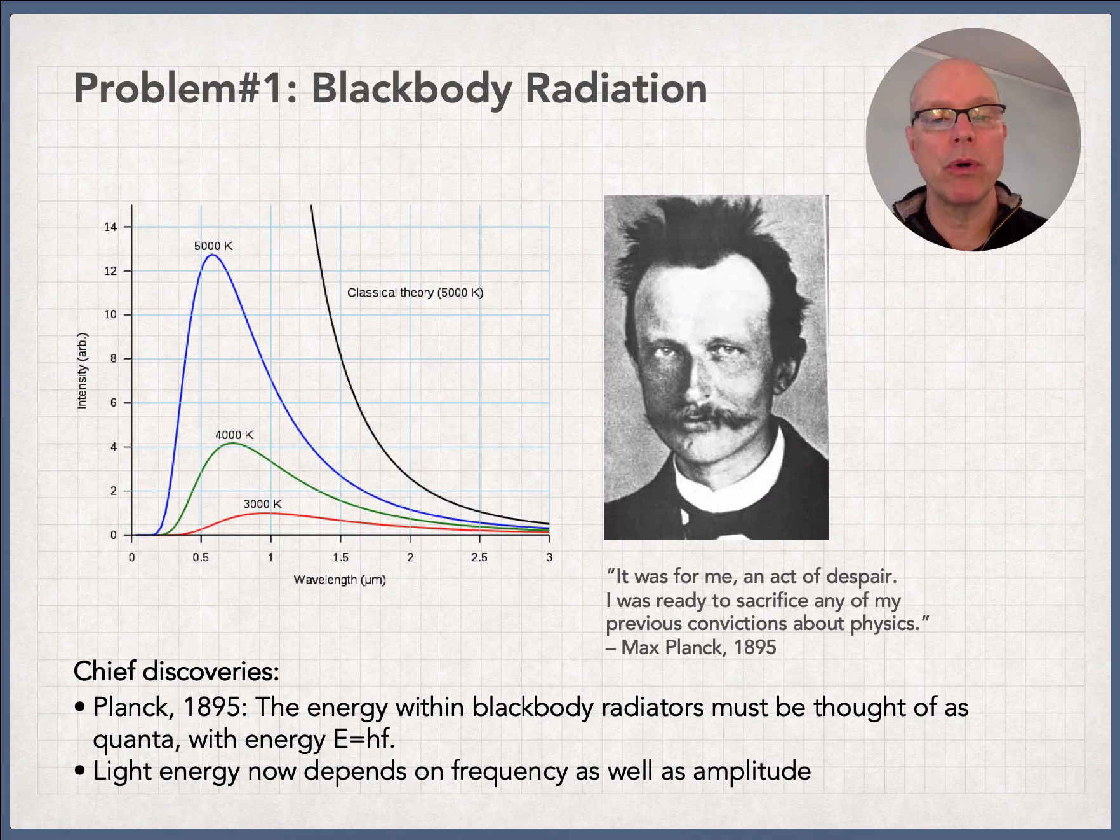The idea was that if you took a fireplace poker and put it in a fire, it's common sense. It always glows red at lower temperatures. If you wanted to get it to go yellow, it's got to be hotter. And yet Maxwell's theory didn't match this reality.